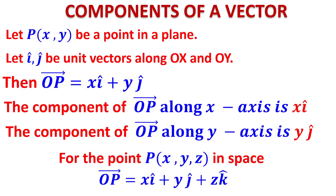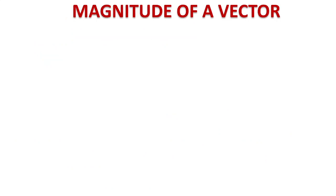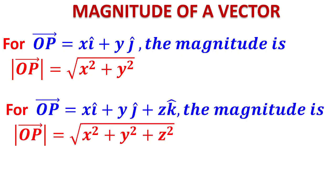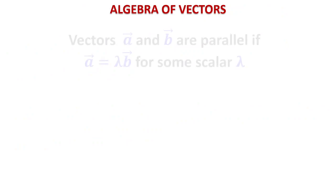We have seen a vector as a position vector, then expressed it as components. Now, what is its magnitude? If the vector is xi + yj, its magnitude is √(x² + y²). If it is xi + yj + zk, the magnitude is √(x² + y² + z²).